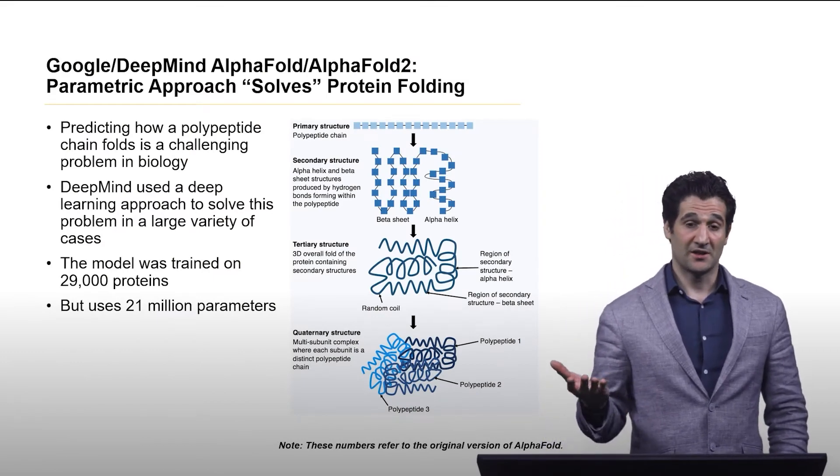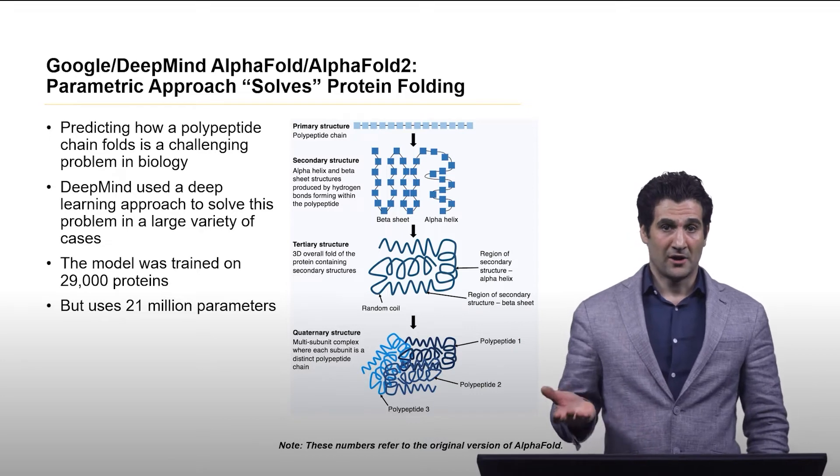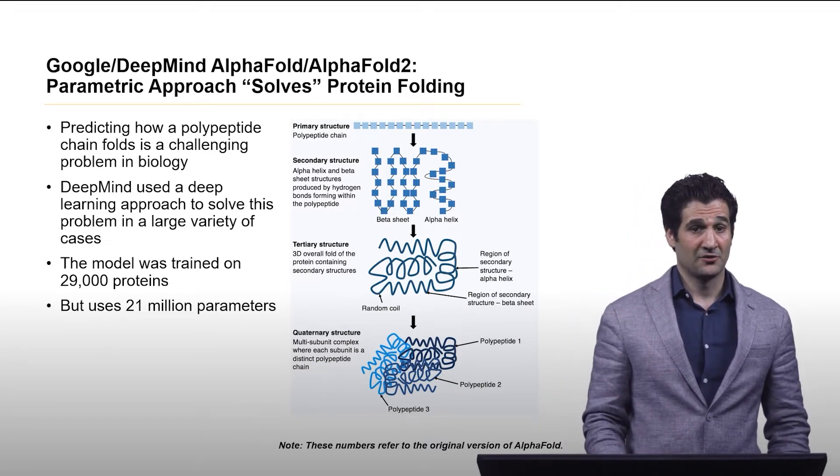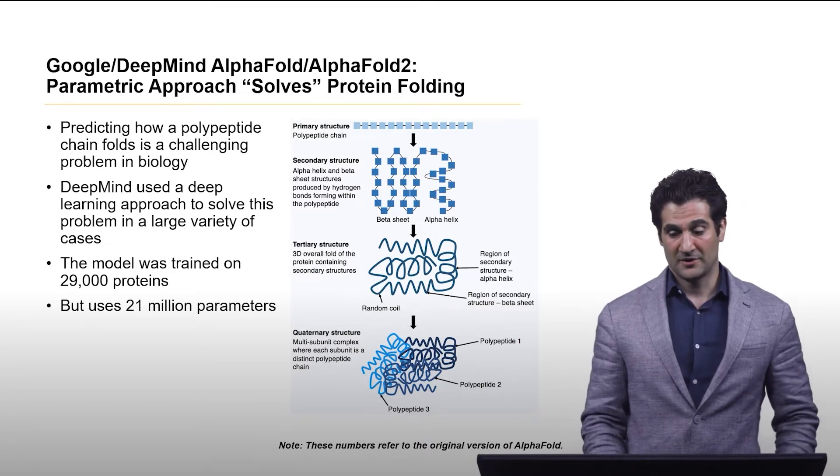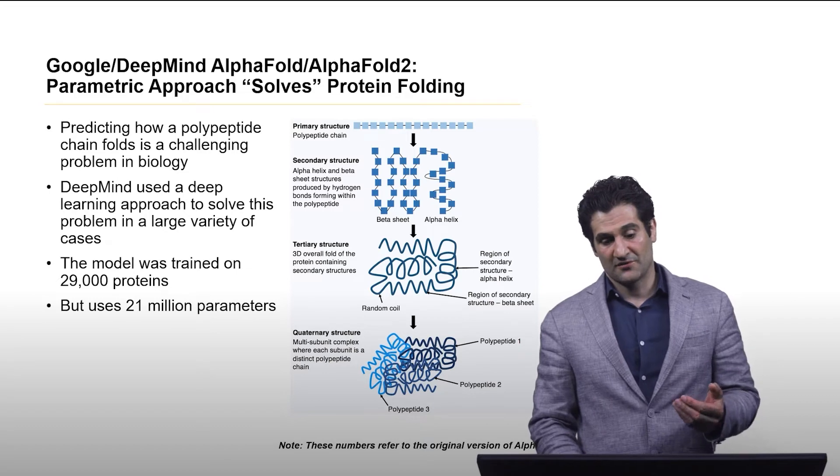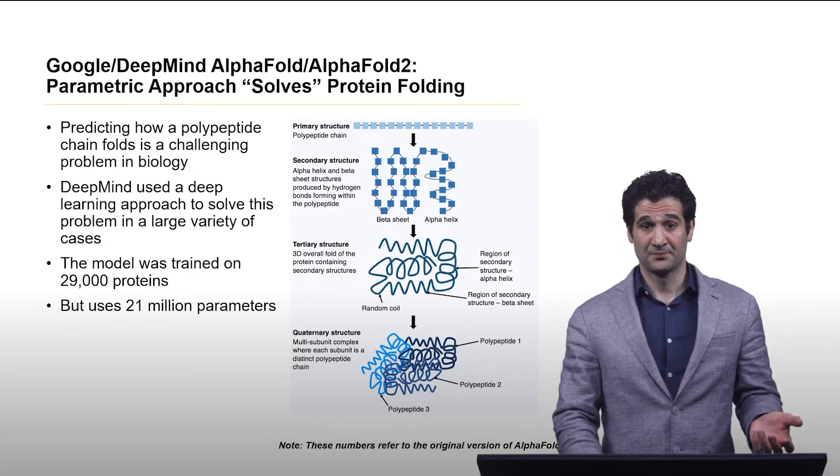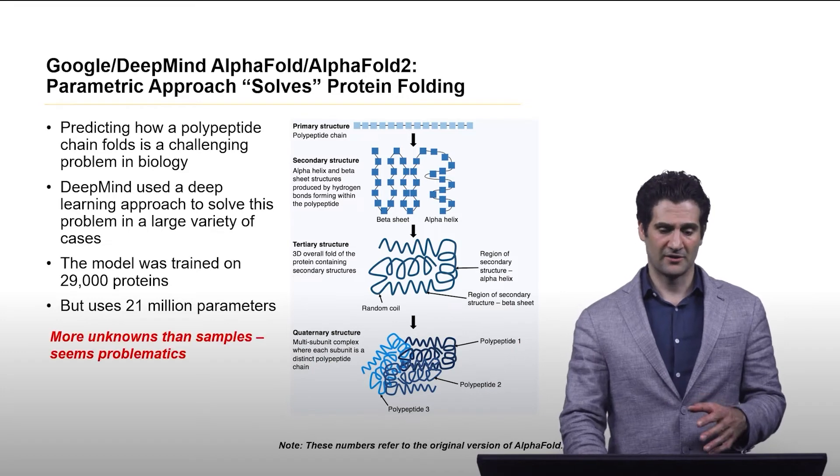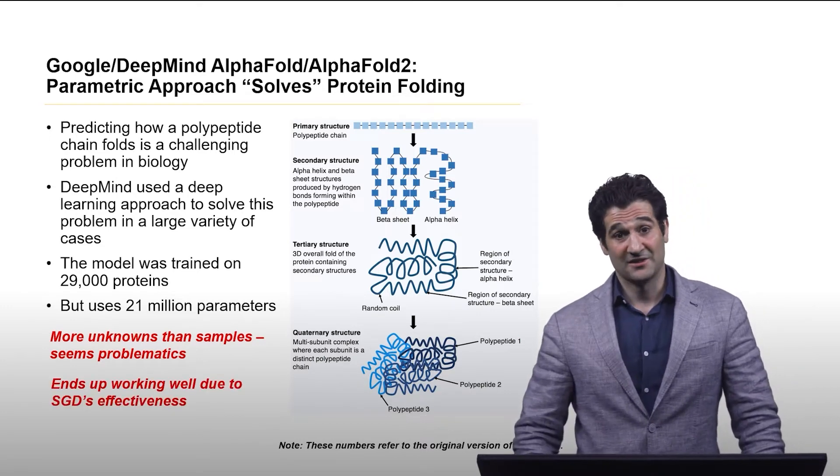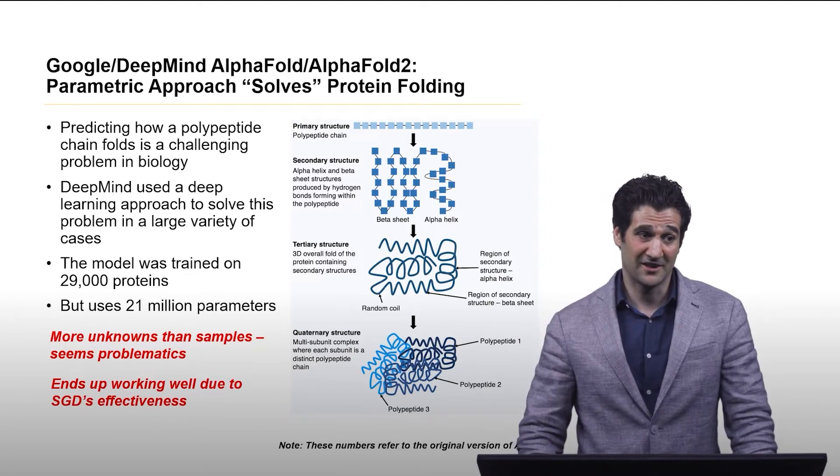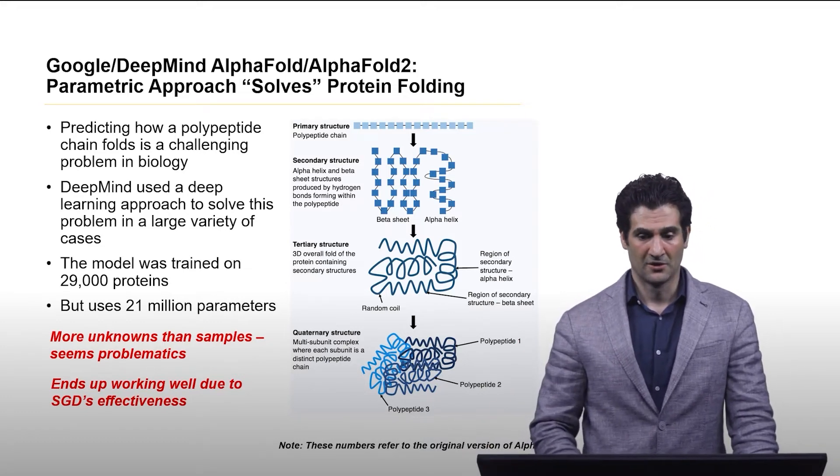Now to give you an idea of the relationships between parameters and samples, here's another famous machine learning model by Google, AlphaFold and AlphaFold2. In the initial AlphaFold, it was trained on 29,000 proteins but used 21 million parameters. That is a lot of parameters. And if this was not a deep learning model and this was a linear regression model, anyone would think it's just insane. But with deep learning this can work. Why is that? Why is this not problematic? Well, a lot of it has to do with stochastic gradient descent being highly effective at finding really good model fit and all the improvements that have gone into that algorithm over the past couple decades.